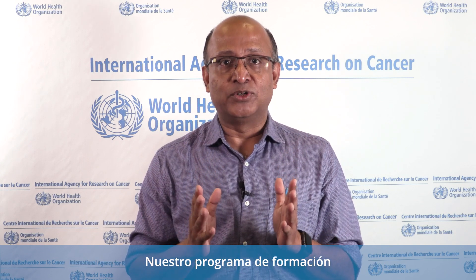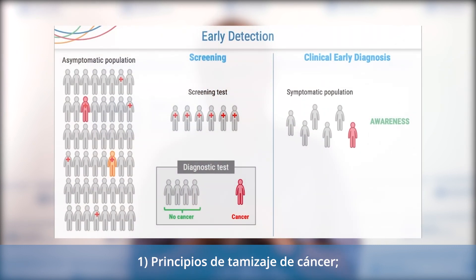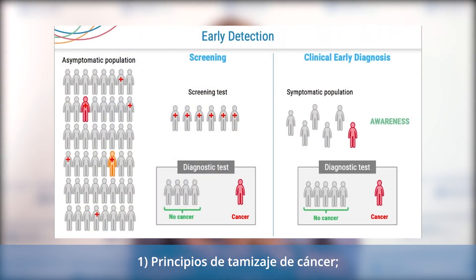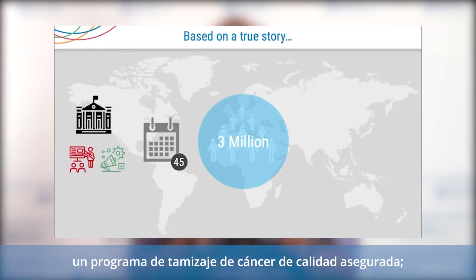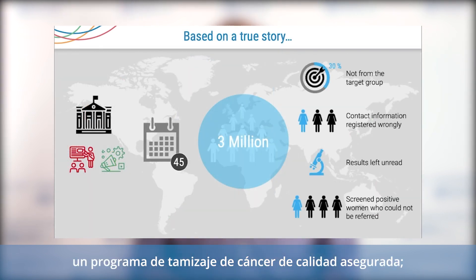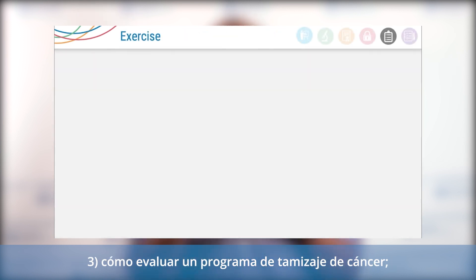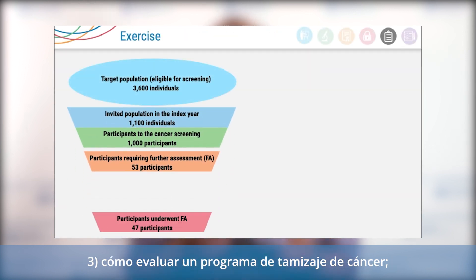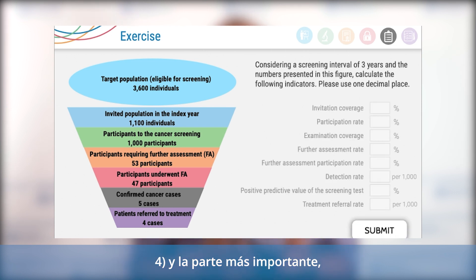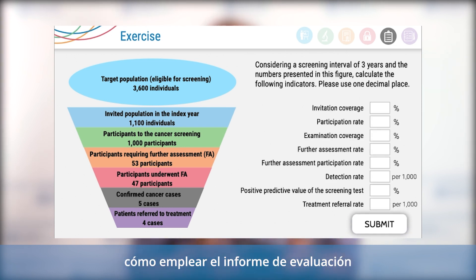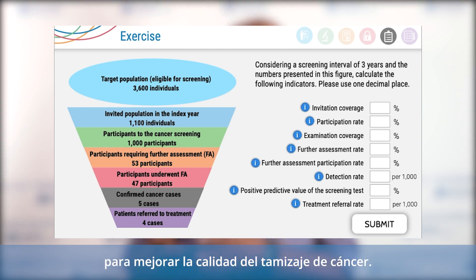Our learning program will primarily focus on four components. Number one, what are the principles of cancer screening? Number two, how to plan and implement a quality assured cancer screening program? Number three, how to evaluate a cancer screening program? And fourth, but most important, how to use that evaluation report to improve quality of cancer screening.